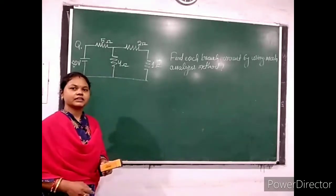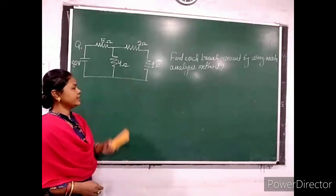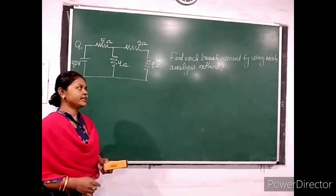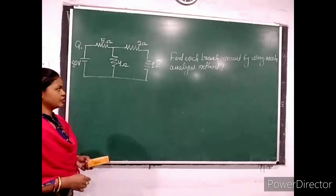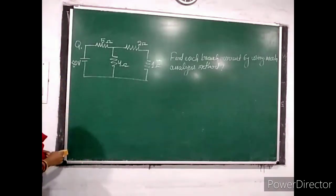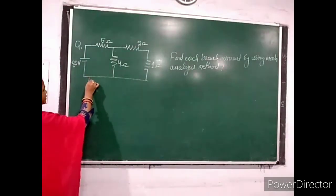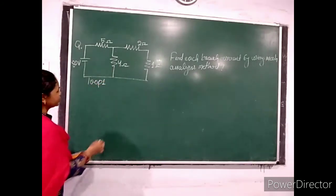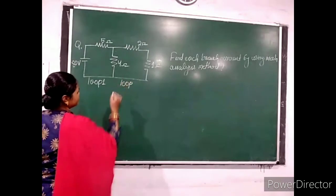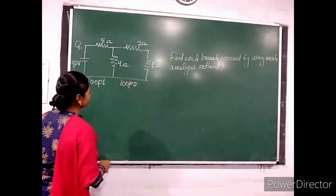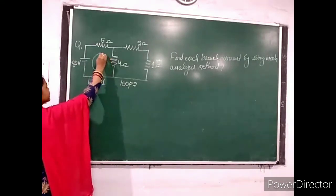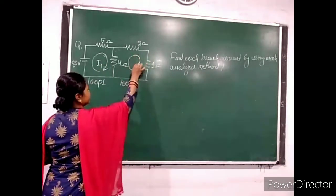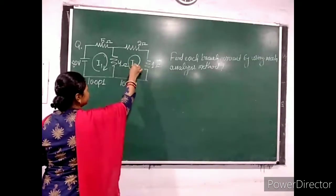Here we discuss a question. This is a circuit and the question is to find each branch current by using mesh analysis method. First, you find how many meshes or loops are there. There are 2 loops: loop 1 and loop 2. You assign the loop current either clockwise or anticlockwise direction. Here I assume clockwise direction of current I1 and I2.